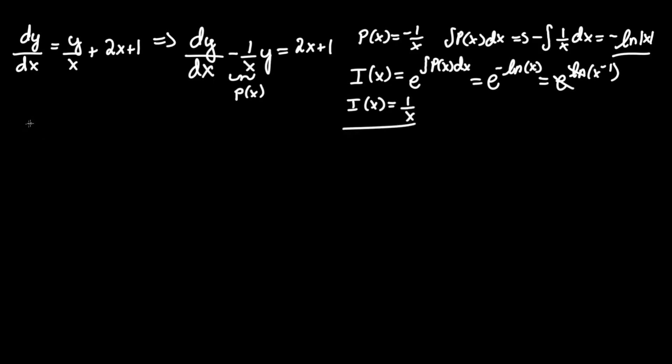Now multiply by everything: 1 over x times dy/dx subtracted by 1 over x squared times y equals 2x times 1 over x equals 2, and 1 times 1 over x equals 1 over x.